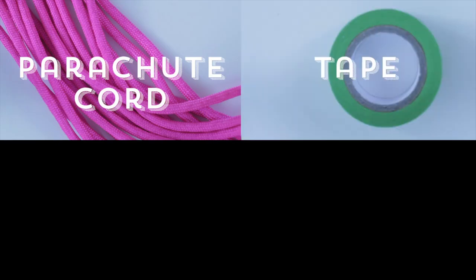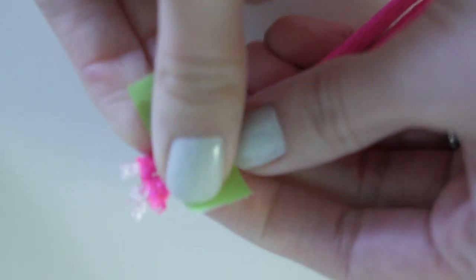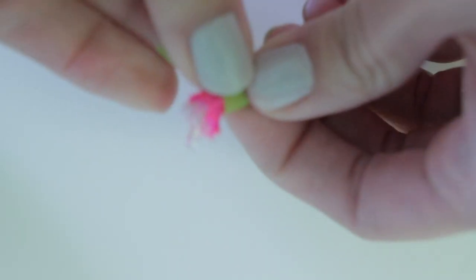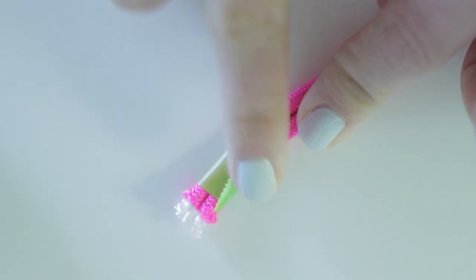You will need two 90 inch pieces of parachute cord, tape, scissors, and a lighter. Take a small piece of tape and place it around the end of the two pieces of string. Then repeat the same thing on the other end. Make sure the strings aren't tangled.